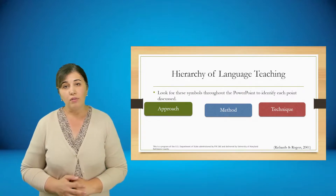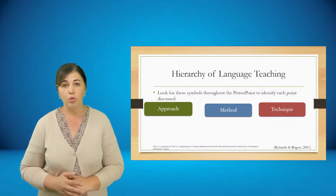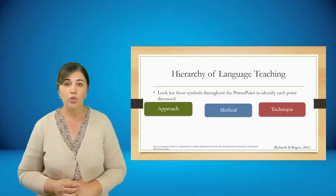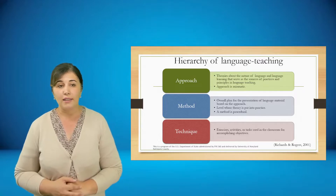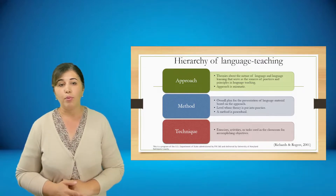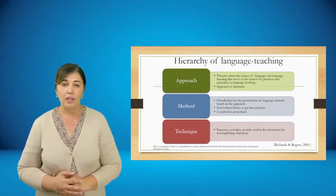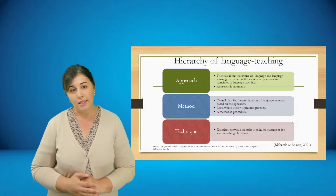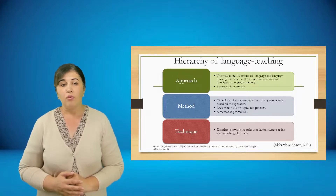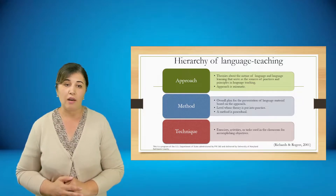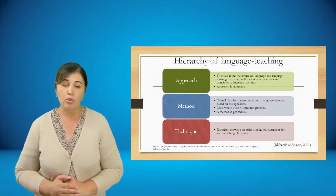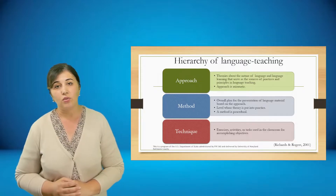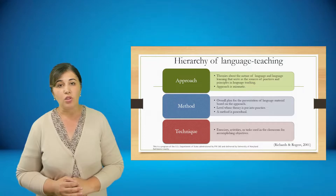I would like you to look for symbols throughout the PPT and identify each point discussed. Please write some notes on the characteristic features of approach, method, and technique. To revisit: approach is axiomatic — it is connected with theory of the nature of language and language learning, serving as the source of practices and principles. Method is an overall plan for presenting language material based on the approach, and it is procedural — the level where theory is put into practice. Technique is a smaller unit in this hierarchy, connected with activities, tasks, and exercises used in the classroom to accomplish objectives.